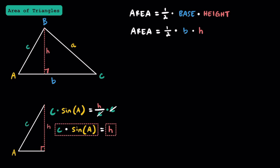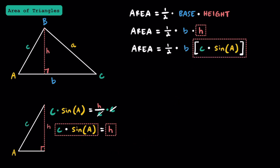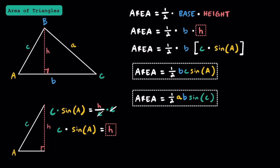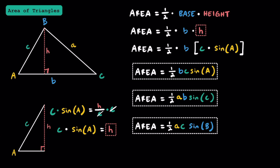Since c times sine of angle A equals the height h, let's substitute that into the area formula. Replacing h with c times sine of angle A, we get the area equals one half times b times c times sine of angle A. If we turn this triangle around and use a different side as the base with a different altitude, you could also come up with similar formulas for the other configurations. Keep in mind that this formula really still is area equals one half base times height — it just comes down to the fact that these heights are expressed using trig.